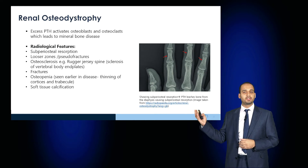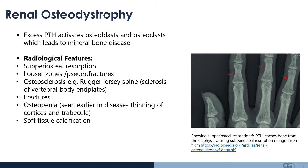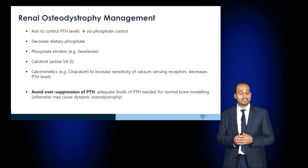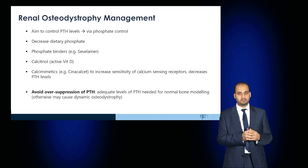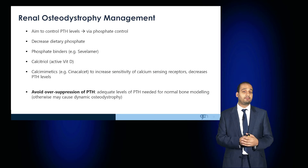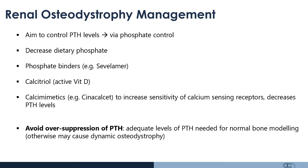Renal osteodystrophy from activation of osteoblasts and osteoclasts leads to mineral bone disease. Radiologically, you'll see subperiosteal resorption, Looser zones or pseudofractures, osteosclerosis — particularly in the spine, what is known as a rugger jersey spine, which is sclerosis of the vertebral body end plates — fractures, osteopenia, and soft tissue calcification. It's important that these patients are managed early by controlling PTH levels via phosphate control. Patients are advised to reduce dietary phosphate, given phosphate binders such as sevelamer, calcitriol or activated vitamin D, and calcimimetics such as cinacalcet. It's important to avoid over-suppression of PTH because adequate levels are needed for normal bone remodeling; otherwise, you'd have accelerated renal osteodystrophy.